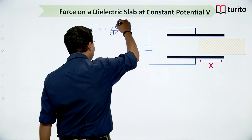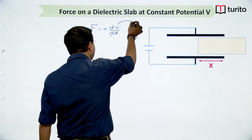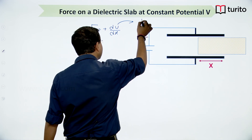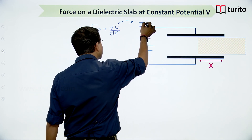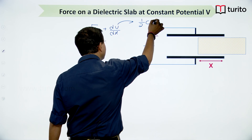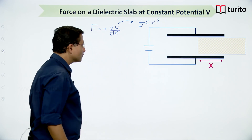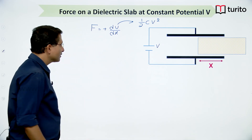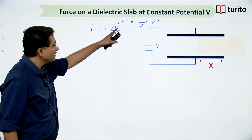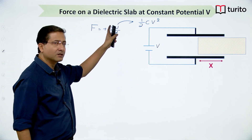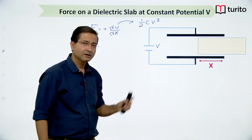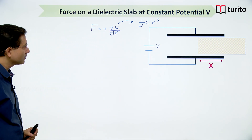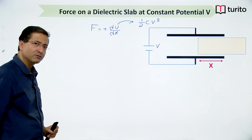We calculate the energy stored inside the capacitor and differentiate it with respect to x to get the force. Since battery remains connected, potential energy U equals half CV². Since potential is constant, when I differentiate U with respect to x, I need to differentiate C with respect to x. Let us first get C in terms of x.